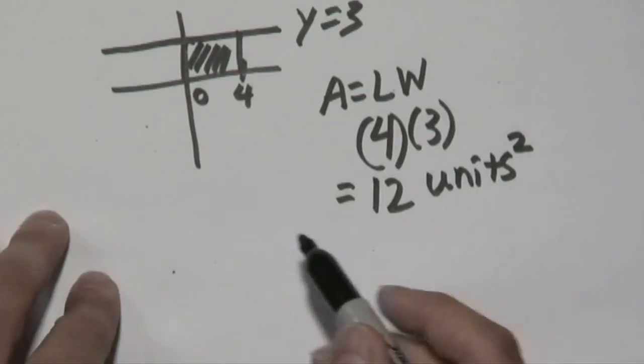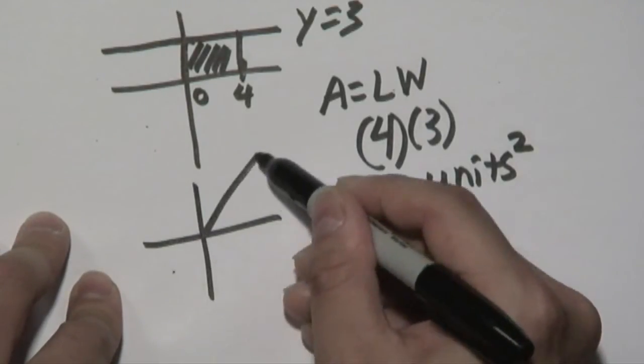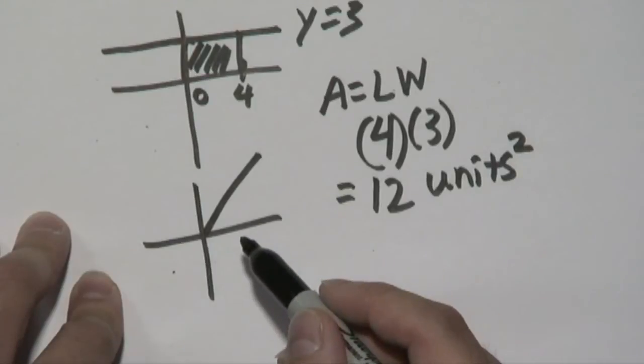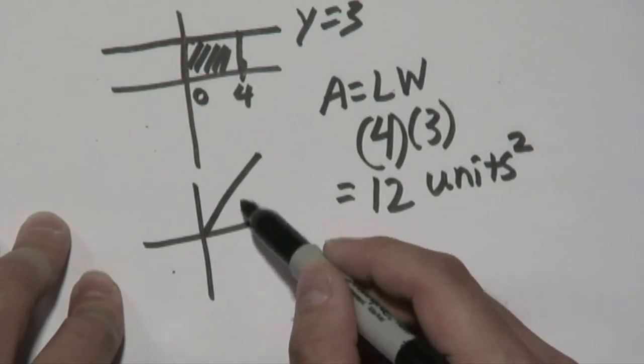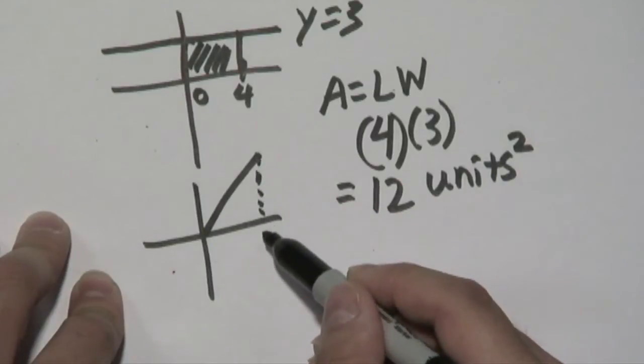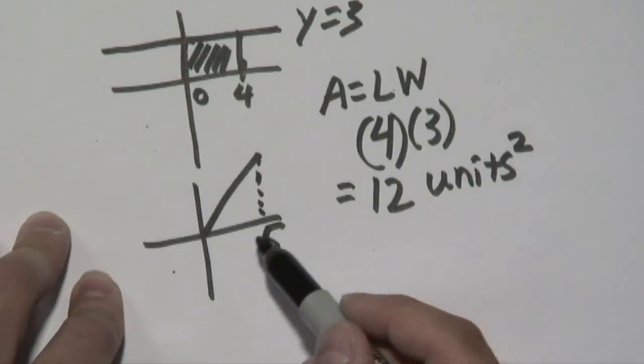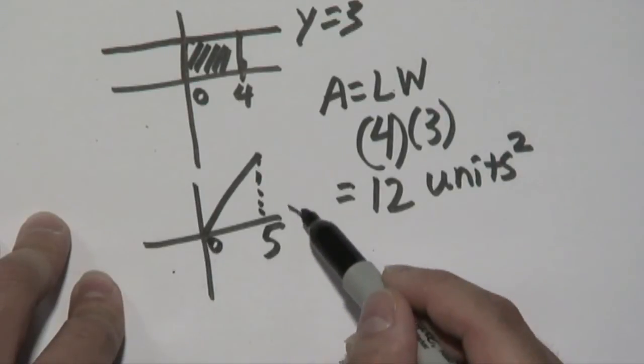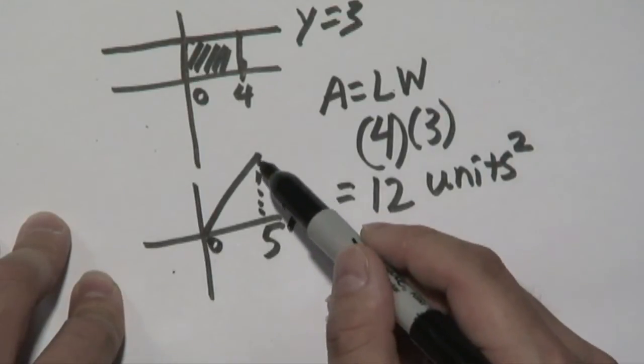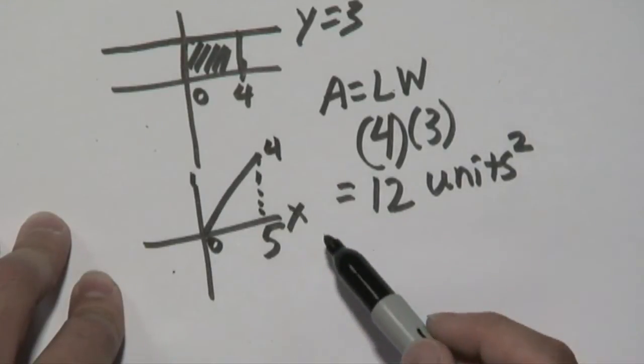Now, suppose your curve was that of a line, and let's just say you want to find out the area under this particular line. Hypothetically, suppose it was 5 from 0 to 5 under the x axis, and let's just say the curve was from 0 to 4 on the y axis.